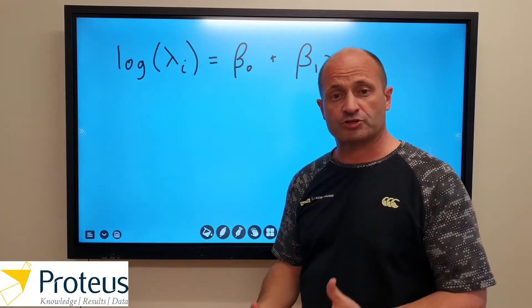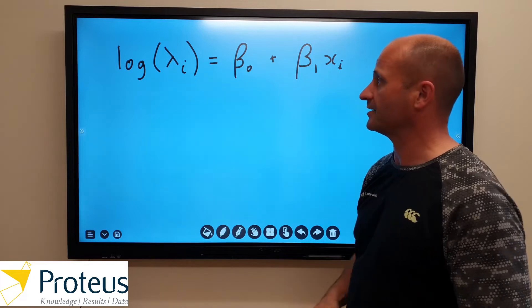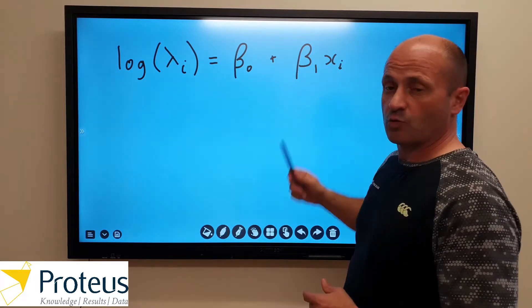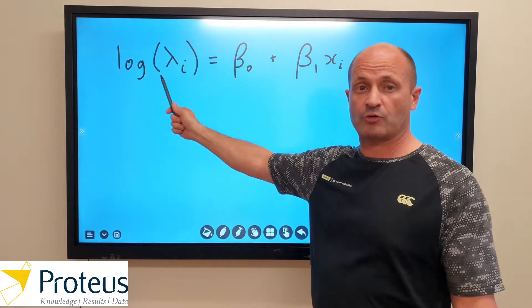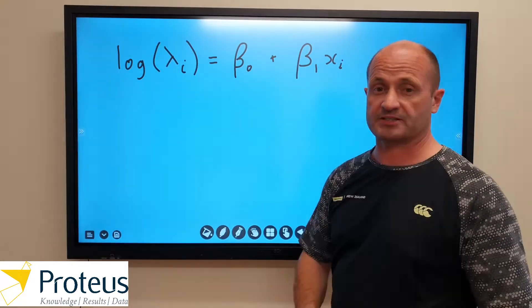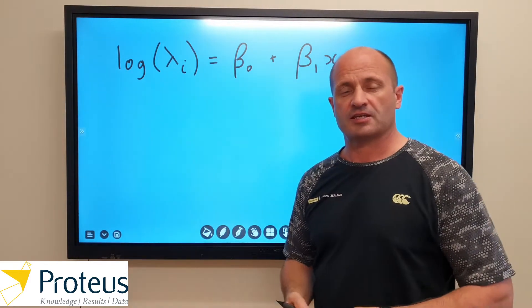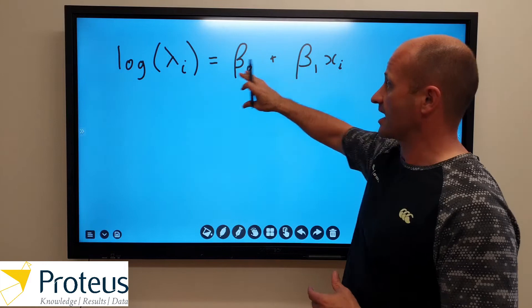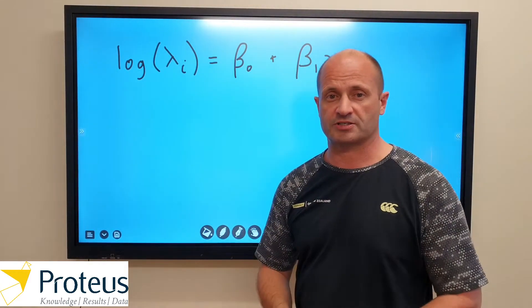So what we do is we then analyze the data and we'll come out with estimates of beta naught and beta 1, and if beta 1 is negative that suggests that our count will be lower as that value of x increases. If beta 1 is positive then that suggests that our rate parameter will increase as the value of the covariate increases as well.